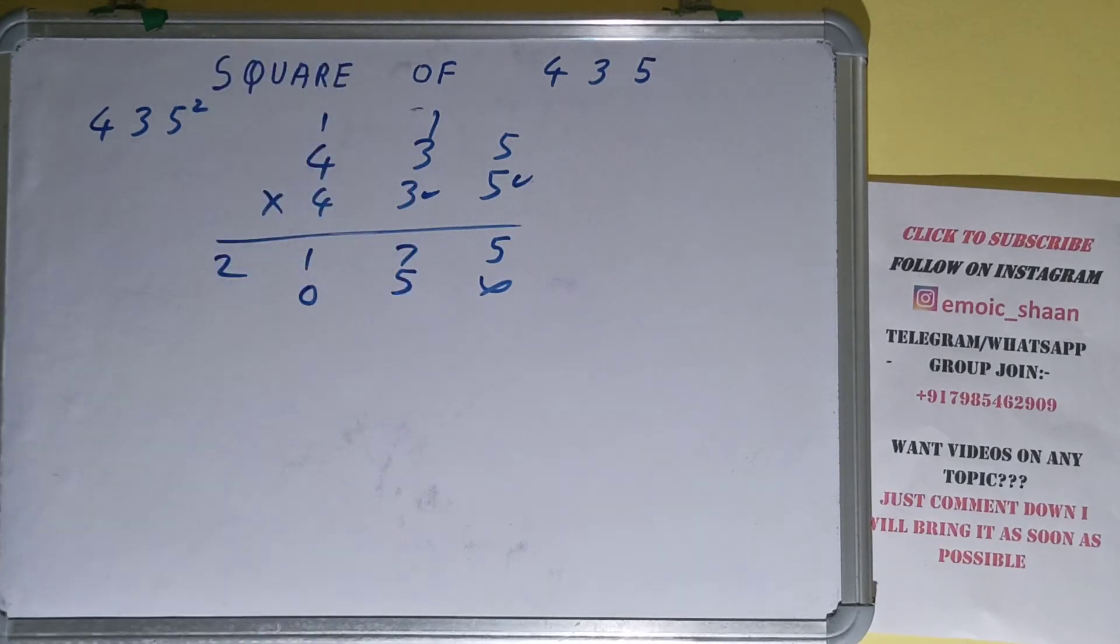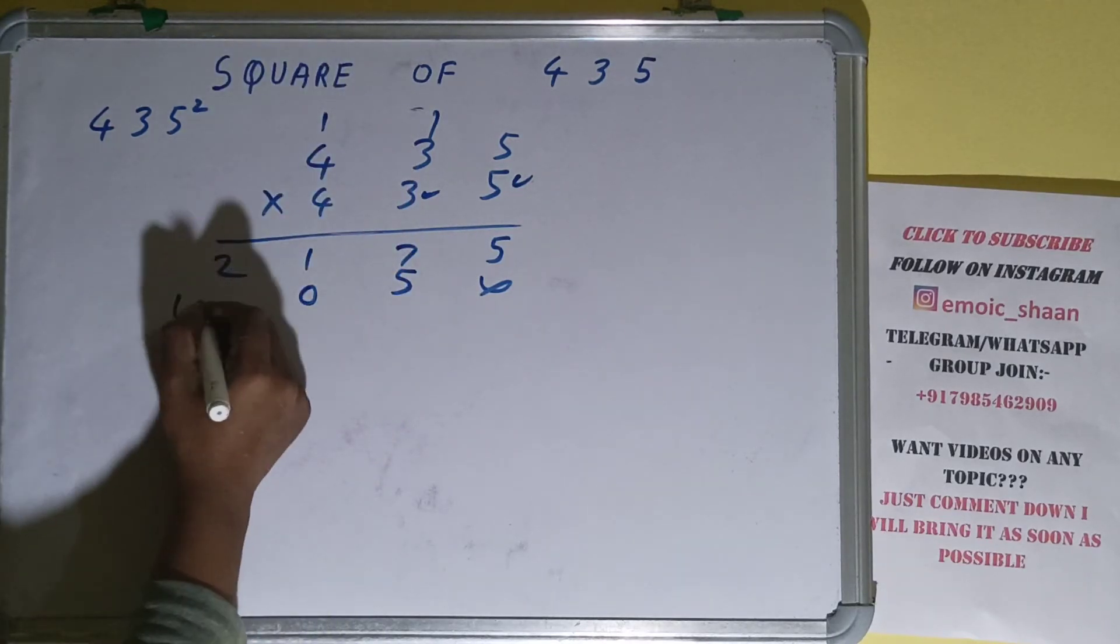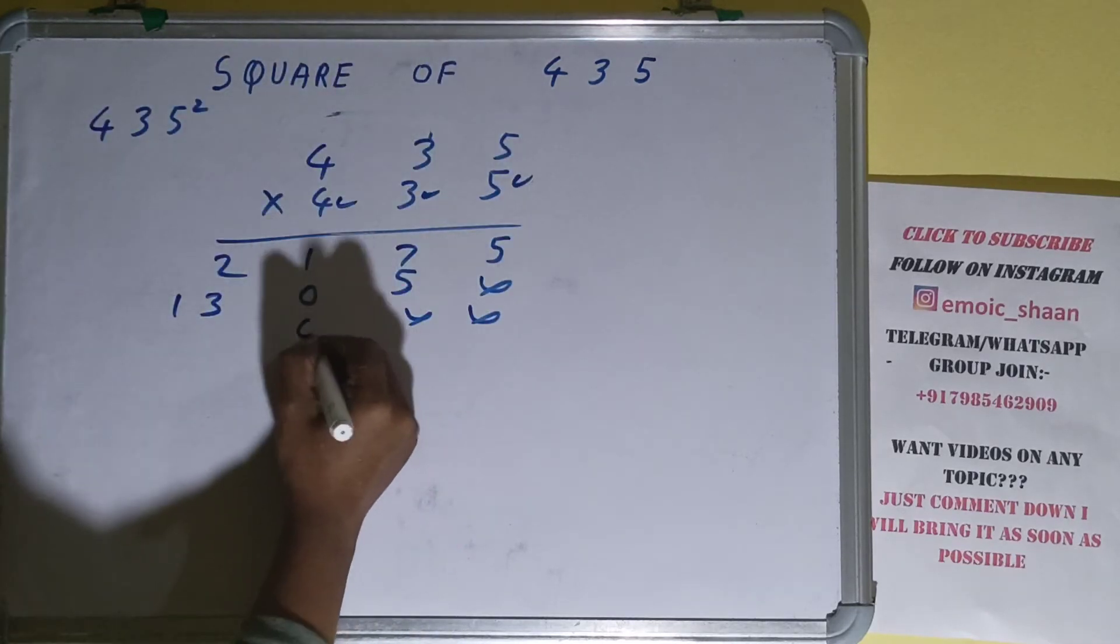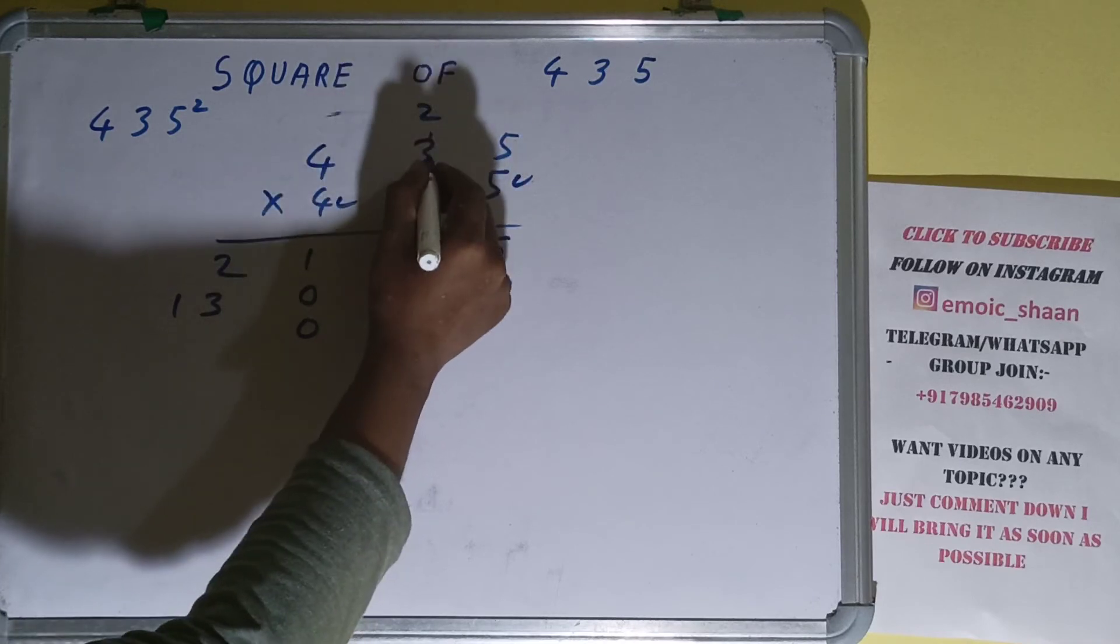1 carry. Now the last 4: 4 times 5 is 20, 2 carry. 4 times 3 is 12 plus 2 is 14, 1 carry. 4 times 4 is 16 plus 1 is 17.